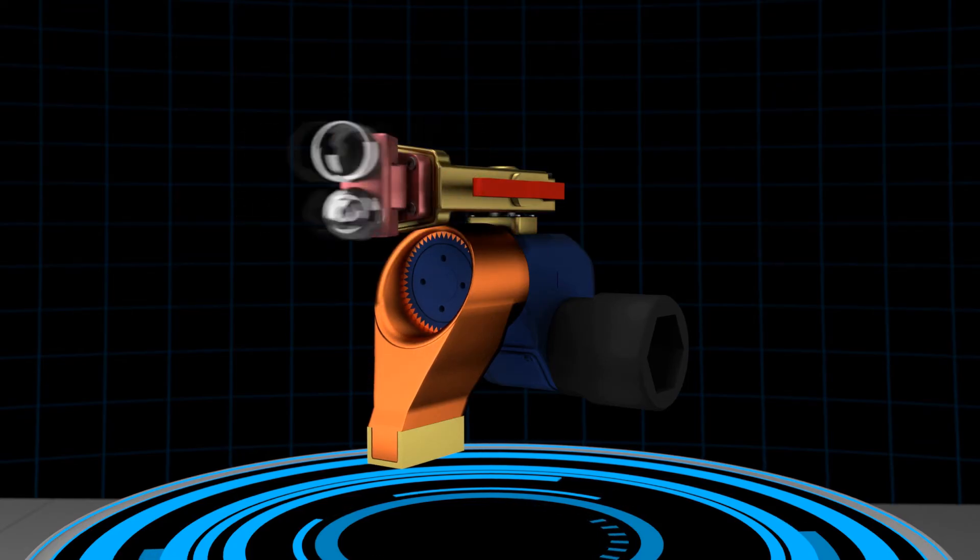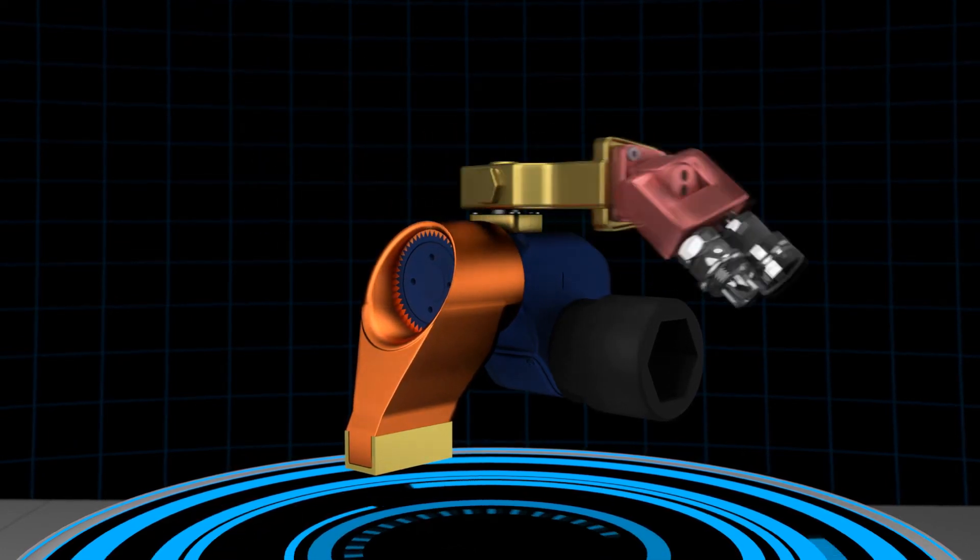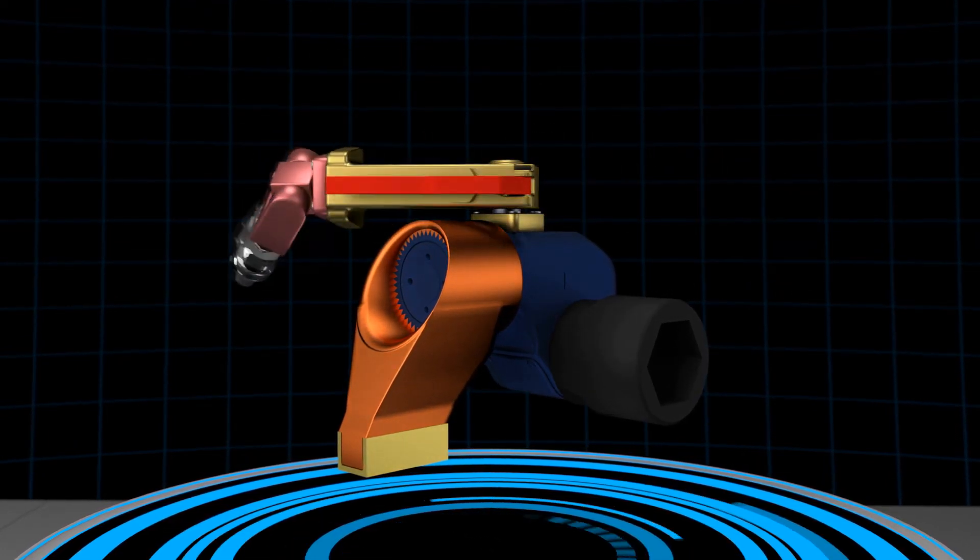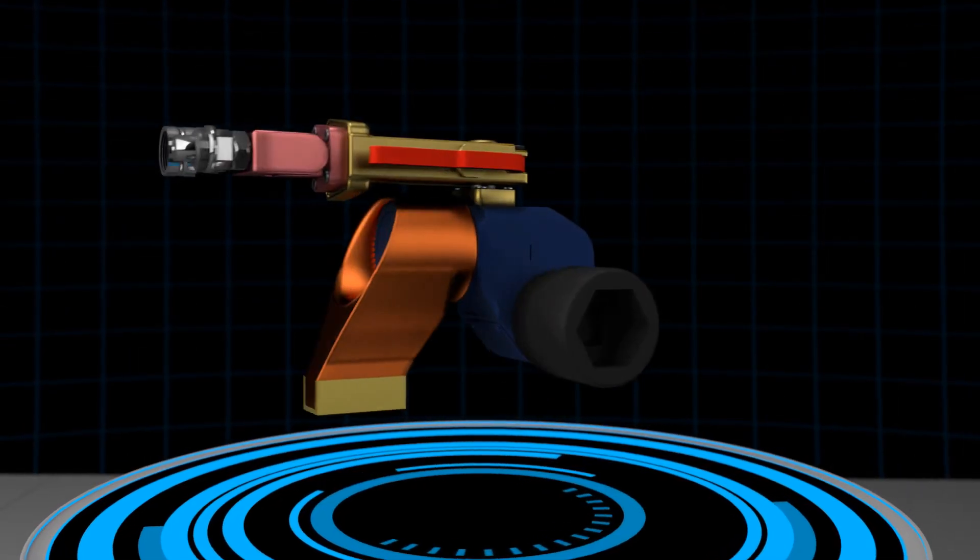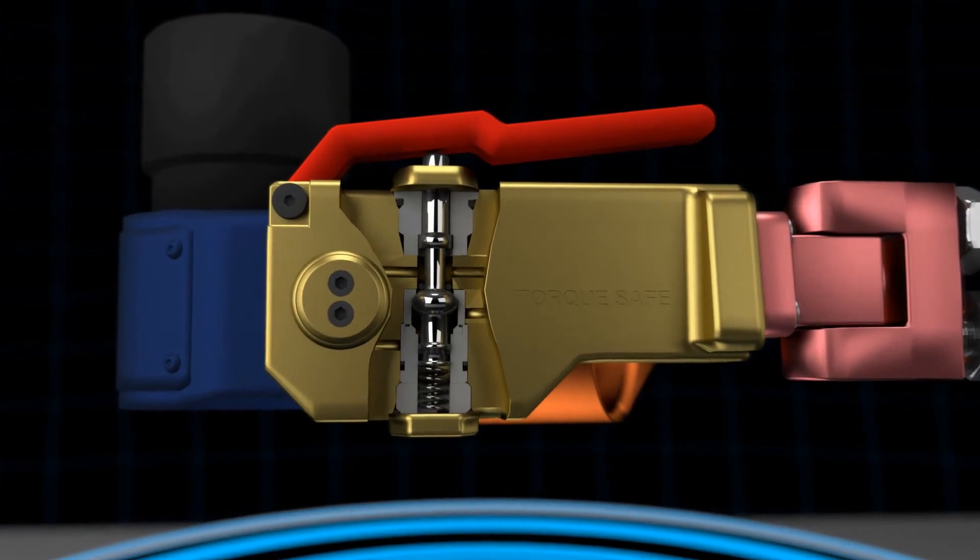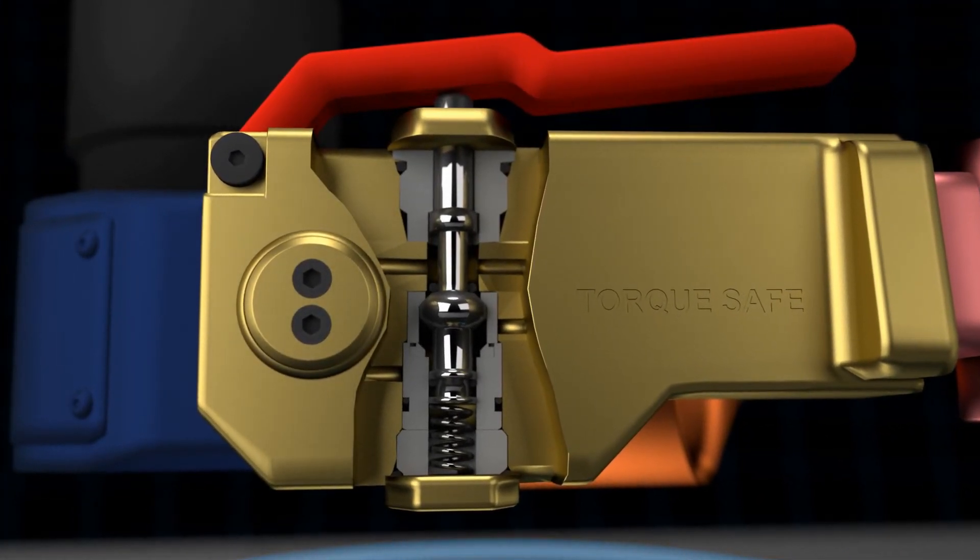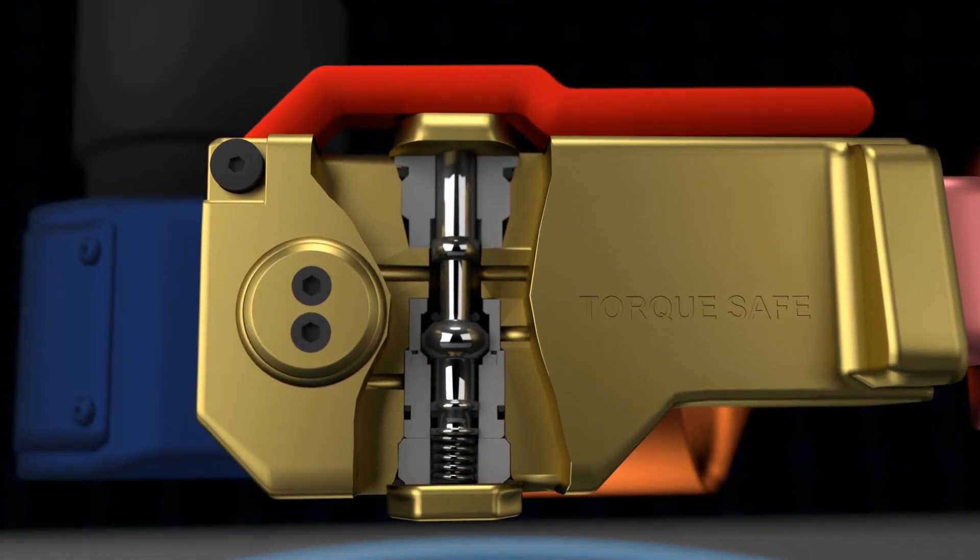The TorxSafe swivel replaces a dual-axis swivel with a three-axis swivel, greatly improving application accessibility. The safety valve is positioned on the hydraulic torque head, replacing the existing swivel joint where the hydraulic hoses connect. The valve is handle operated, moving an internal spool assembly.